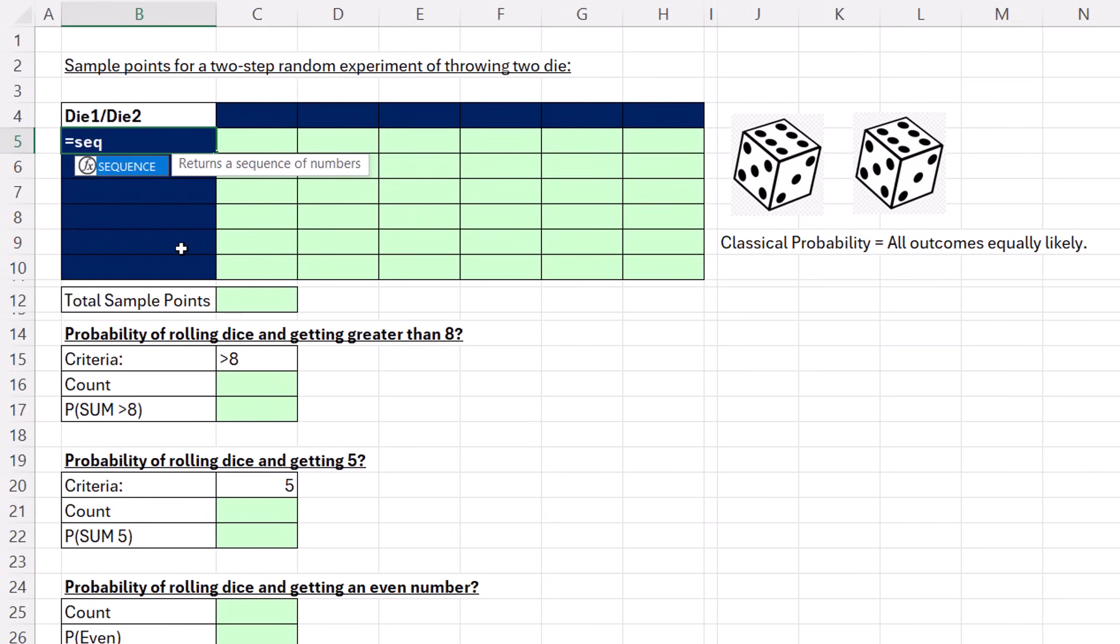We can do that with the SEQUENCE function. Excel's golden rule says if we're going to put something into a formula and it's going to change, we have to put it in a cell and label it. But I don't think we're going to change the sides of dice anytime soon, so I'm just typing six. By default, SEQUENCE gives me rows one to six. We have to do the same thing for the columns. We'll skip rows, comma, six, and Enter.